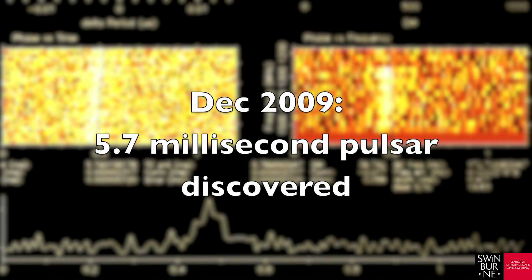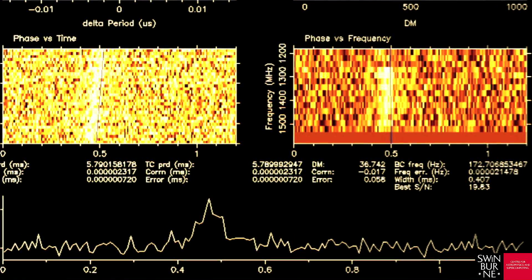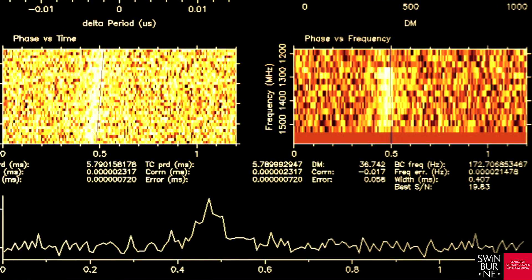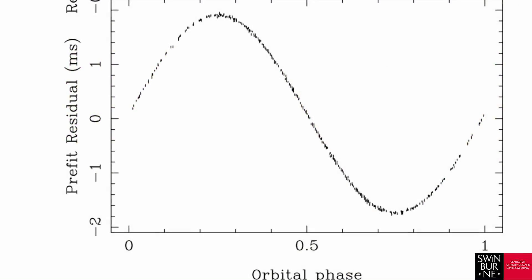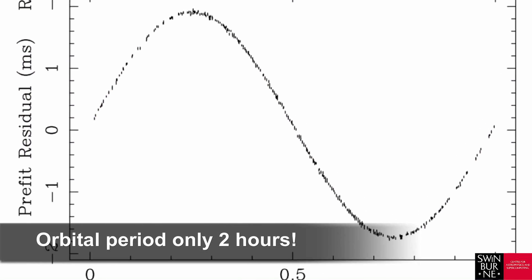In 2009 a 5.7 millisecond pulsar was discovered on our supercomputers and our colleagues at Jodrell Bank soon realized that this star was orbiting another object every two hours.